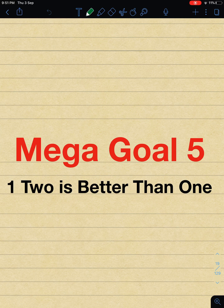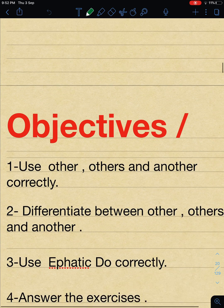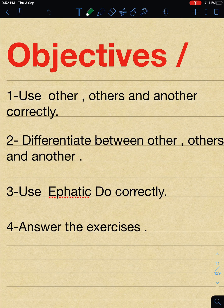Hello everybody. Mega Goal, number five, third secondary. This is the first unit: 'Two is Better Than One.' In this lesson we will be finishing up with the grammar lesson. We have covered objectives number one and two already - we learned how to use 'other,' 'others,' and 'another' correctly, and we differentiated between them. Right now we will focus on using Emphatic Do correctly and answer the exercises.